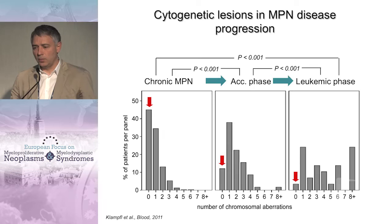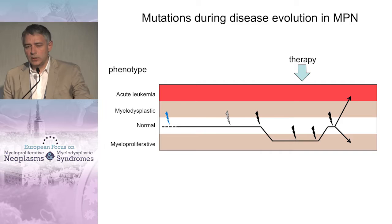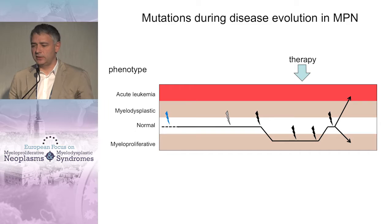This process has a very strong genetic component. This data comes from SNP array analysis done in my laboratory. The red arrow shows the wild-type karyotype by SNP array analysis. In the accelerated phase there is a dramatic decrease — about 45% of patients have a wild-type karyotype — and that decreases to 10% in accelerated phase. In acute myeloid leukemia you barely see a patient with a wild-type karyotype, and the number of cytogenetic aberrations is increasing dramatically.